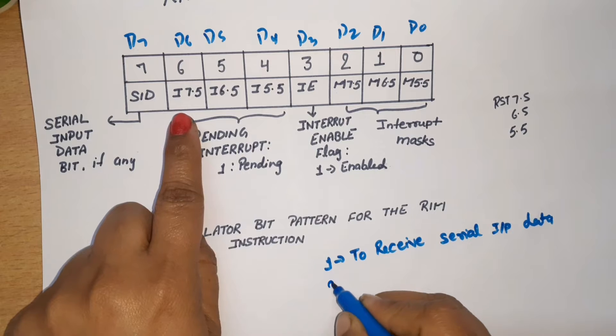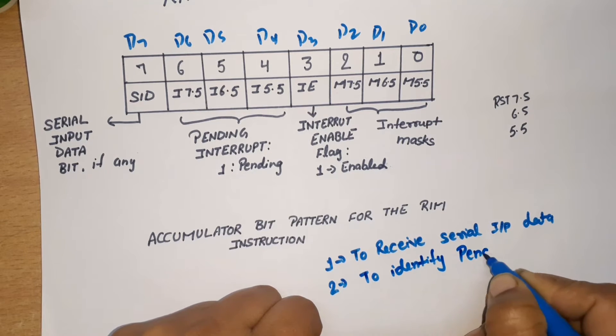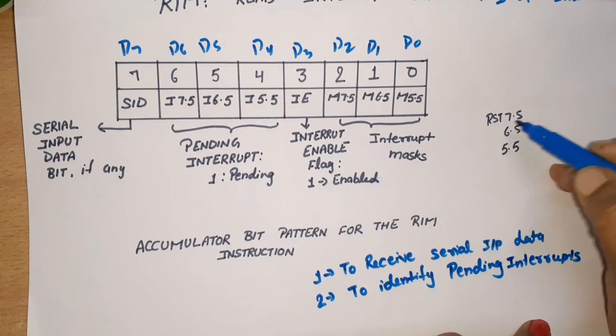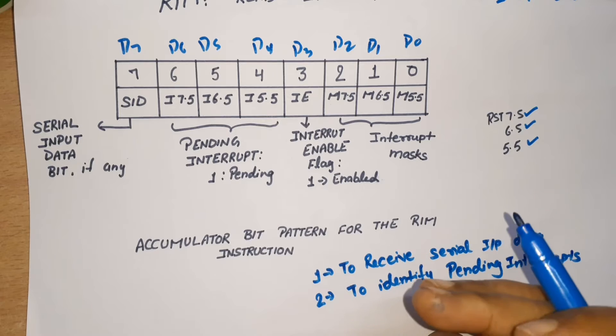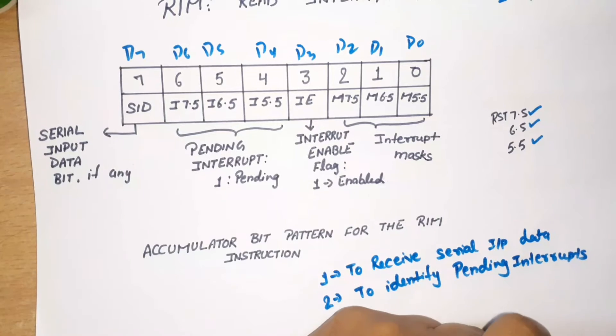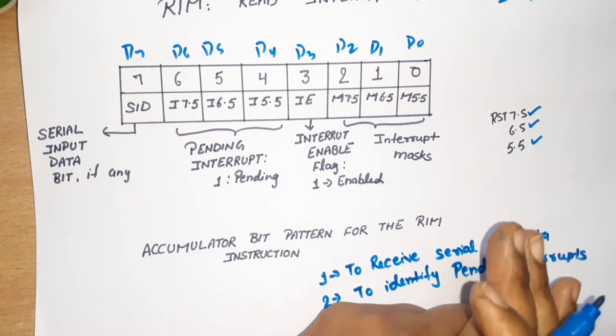The second function is to identify pending interrupts. Now what are pending interrupts? This instruction is used for these three interrupts. Suppose these three interrupts, or two, or one is active and there's one interrupt request. But at a time only one will provide access to the microprocessor, only one will provide access to the service. The other one will not provide service. Those will be pending interrupts.